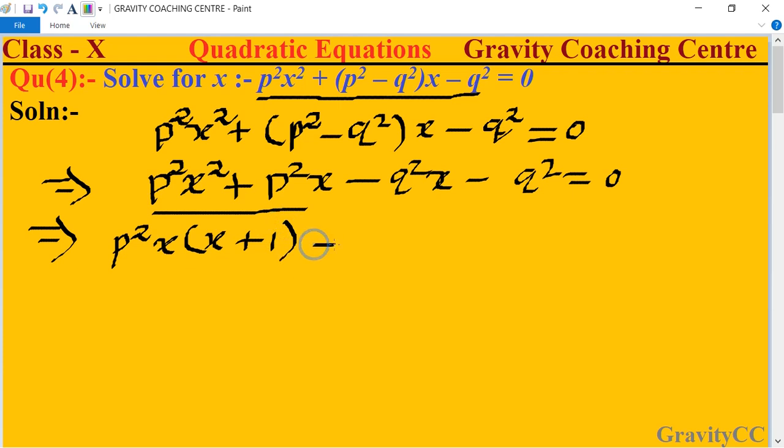So x + 1 equal to zero. And now we take x + 1 as a common from first two parts, from the two parts.